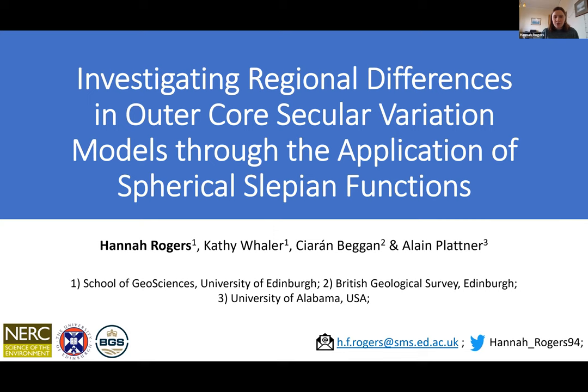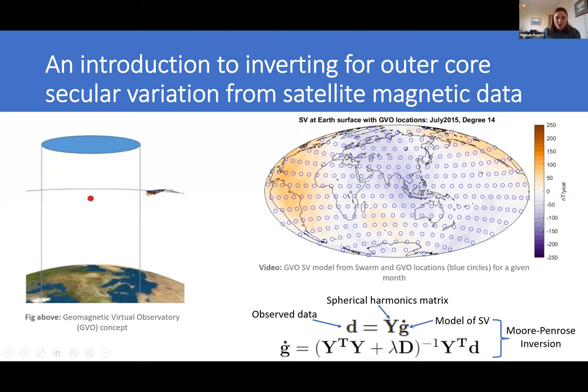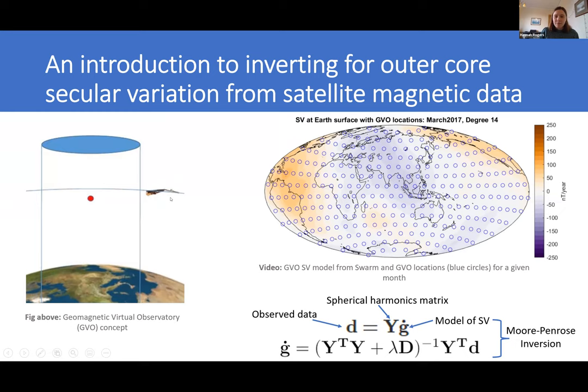This talk is actually a really good follow-on from John's talk, hopefully you'll agree by the end of it. Before I speak about the specifics of my research, I wanted to provide a quick recap of how we produce secular variation models from satellite magnetic data. We've now got a 20-year dataset of satellites flying around the Earth — the CHAMP, the Cryosat, and the Swarm satellites — which have all been treated using the geomagnetic virtual observatory concept.